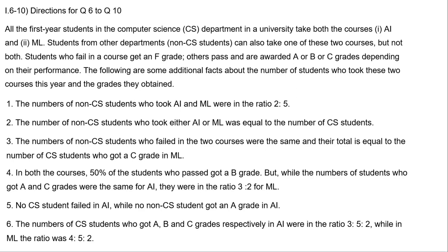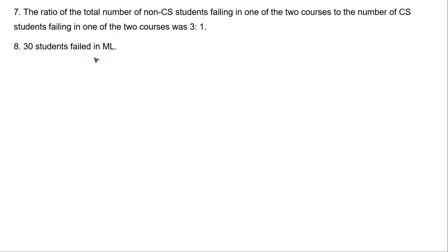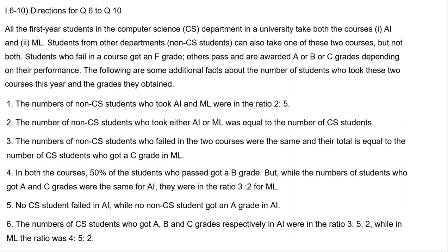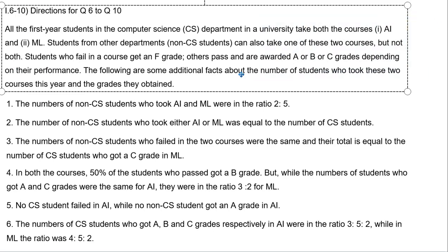There are a few additional facts given about the number of students who took these two courses and the grades obtained. The two important distinctions are CS and non-CS. In CS, every student took both courses AI and ML. In non-CS, no student took both courses. After reading the statements, we need to make a table, so let's do that.